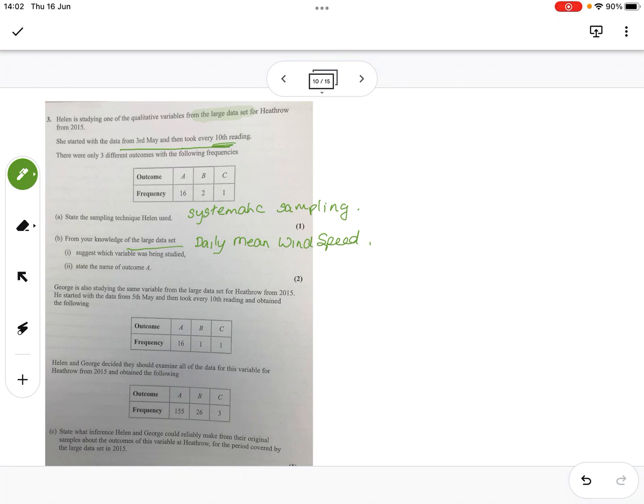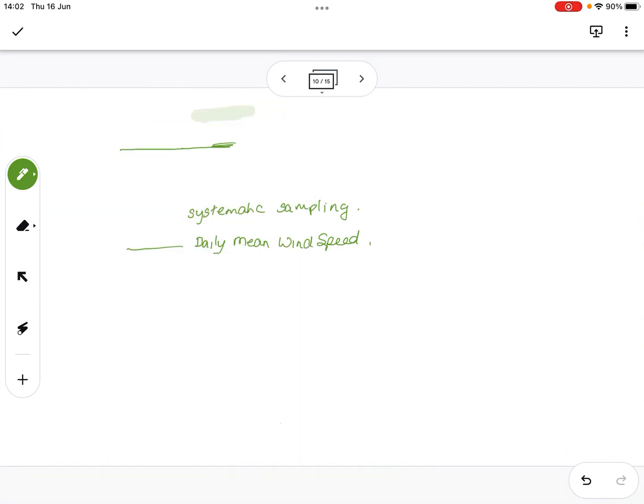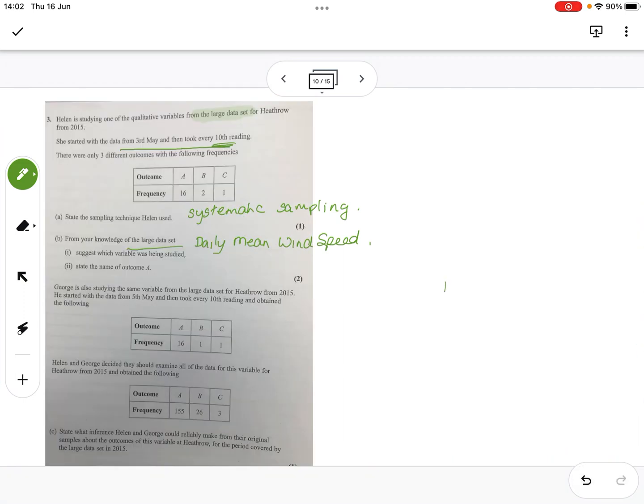Looking at the outcome of A, on the Beaufort scale of wind there's lots of them, but at Heathrow there were only four. Not applicable, which implies there was no wind or they haven't measured it—you can't use that data. Then they've got fresh, moderate, or light. This one was actually light that they were looking for. That's two marks potentially. We would have got that one; the other would be questionable, as my students found.